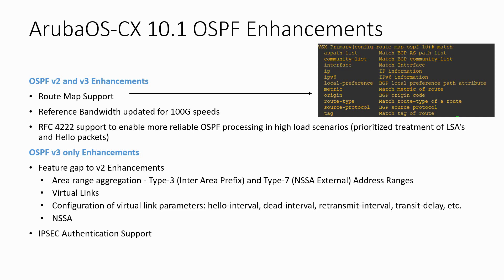Release 10.1 also fills some feature gaps for OSPF v3: area range aggregation for type 3 and type 7 address ranges, virtual links including configuration of virtual link parameters like hello interval, dead interval, retransmit interval and transit delay. Not-so-stubby areas are also supported. And with release 10.1 we now support IPsec authentication for OSPF.